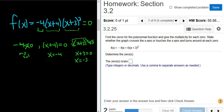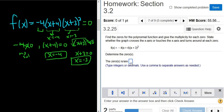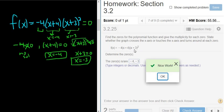So we have two zeros. We have x equals negative 4, and x equals negative 3. There's really no work to show here. You can see it from right here, right? Negative 4 is what makes that zero. Negative 3 is what makes that zero. So let's type them in. So negative 4. So no work to show here.